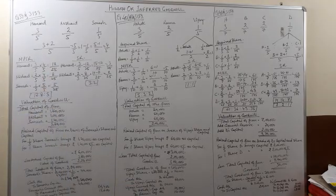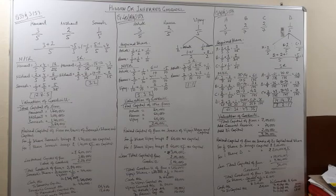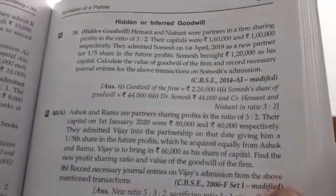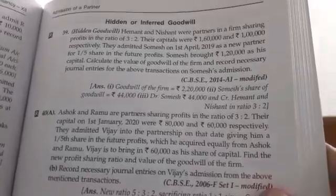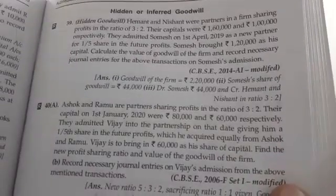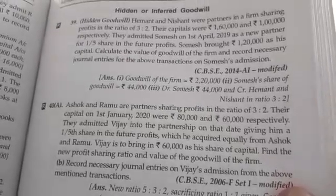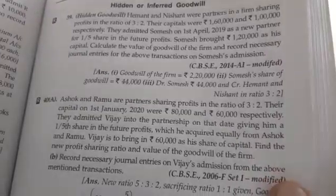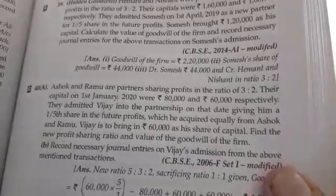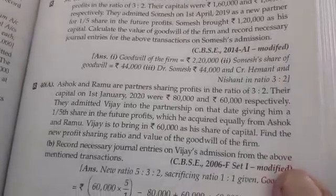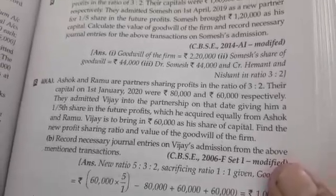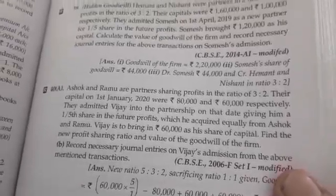Now question number 40A. Ashok and Ramu are partners sharing profits in the ratio of 3:2. Their capitals on 1st January 2020 were Rs 80,000 and Rs 60,000 respectively. They admitted Vijay into the partnership on that date, giving him a one-fifth share in future profits, which he acquired equally from Ashok and Ramu. Vijay is to bring in Rs 60,000 as his share of capital. Find the new profit sharing ratio, value of goodwill, and record the necessary journal entries on Vijay's admission.